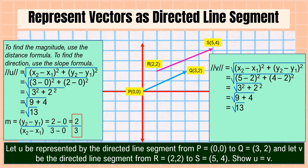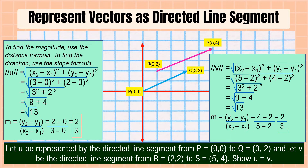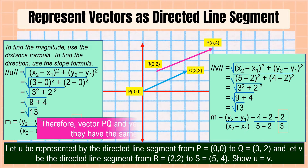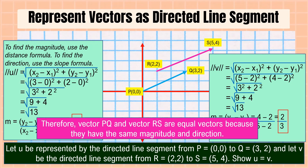Next, we're going to solve the direction of directed line segment v using the slope formula: (y₂ − y₁) over (x₂ − x₁). Substituting all the points, the slope of directed line segment v is equal to 2/3. Therefore, vector PQ and vector RS are equal vectors because they have the same magnitude and direction.